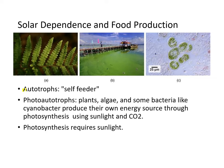The autotrophs, or self-feeders, are the ones who carry out photosynthesis. There are many autotrophs. First, photoautotrophs: plants, algae, and some bacteria like cyanobacteria produce their own energy source through photosynthesis using sunlight and CO2. Photosynthesis obviously requires sunlight.